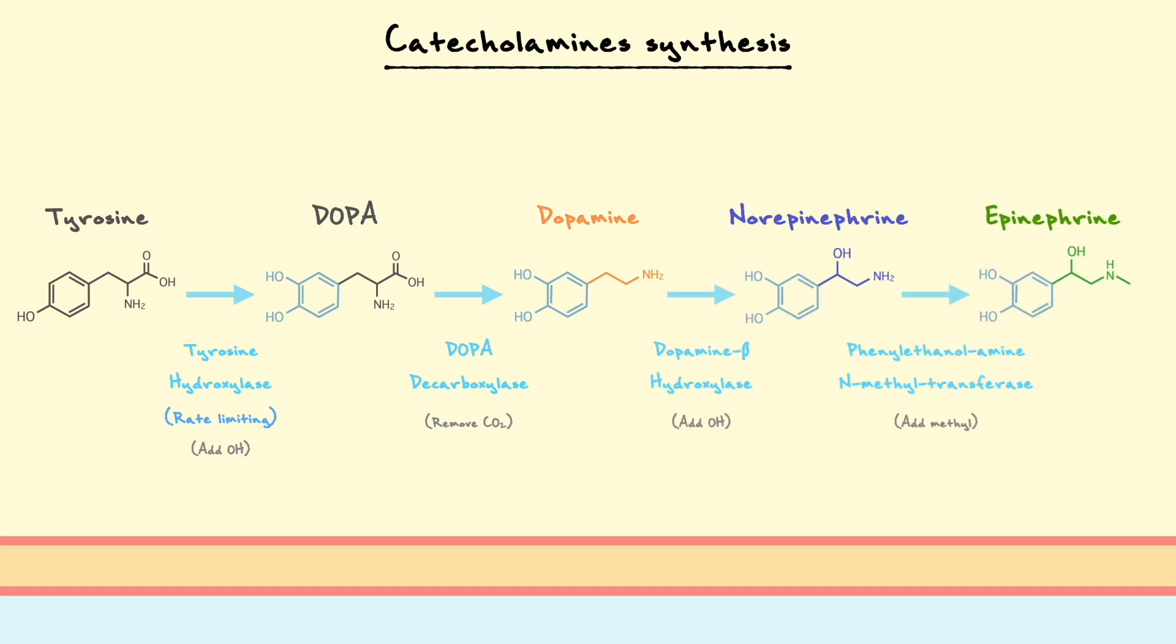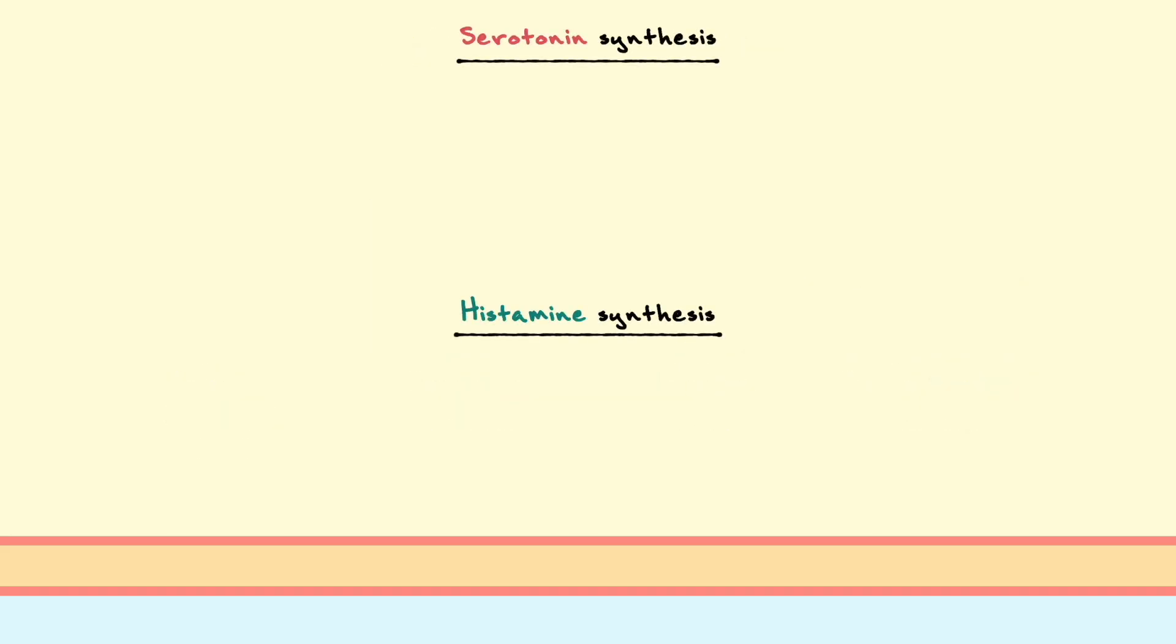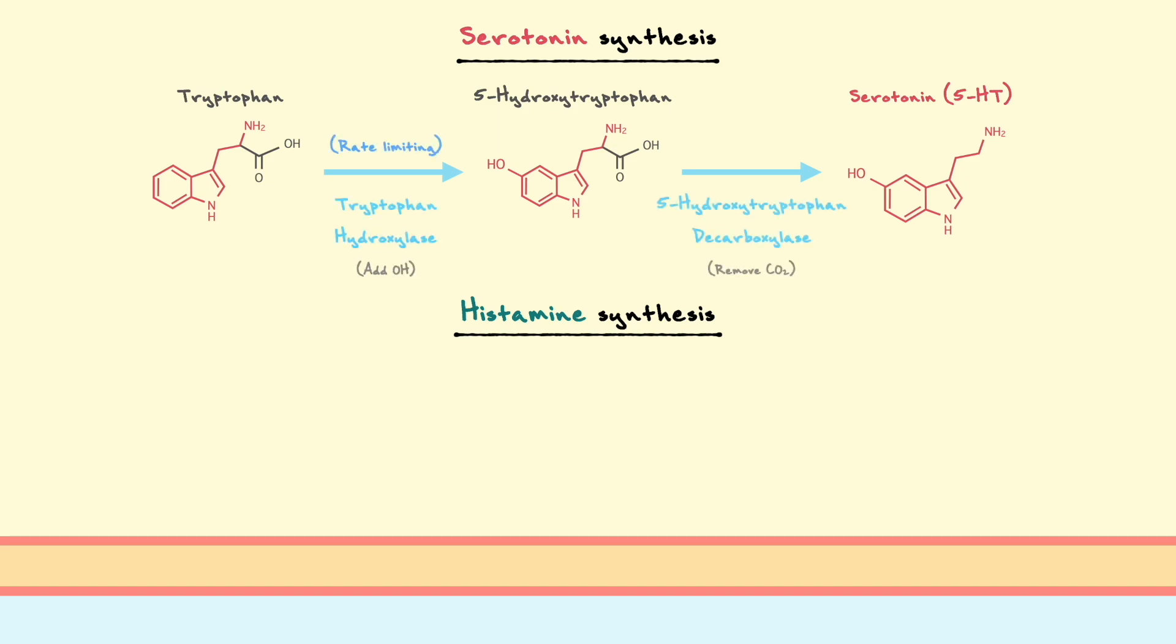Now that we have seen the synthesis pathway for catecholamines, let's see how serotonin and histamine are synthesized. Starting with serotonin, serotonin is synthesized from the essential amino acid tryptophan, and this synthesis is performed in two steps, which requires the help of two enzymes, tryptophan hydroxylase and 5-hydroxytryptophan decarboxylase. In the first step, tryptophan hydroxylase adds a hydroxyl group onto the benzene ring of tryptophan, and in the second step, 5-hydroxytryptophan decarboxylase removes the carbon dioxide group in grey to yield serotonin.